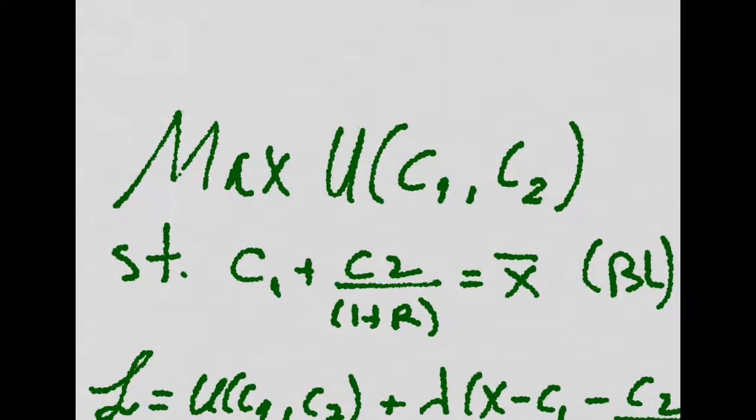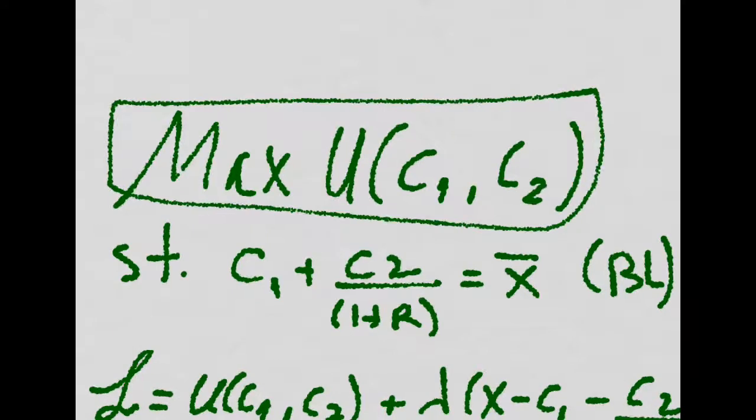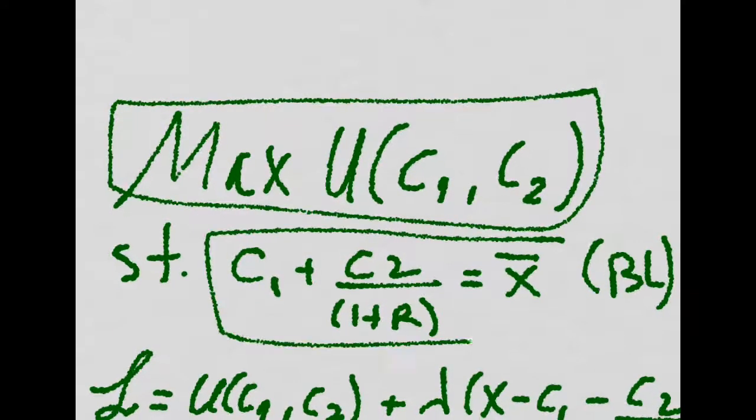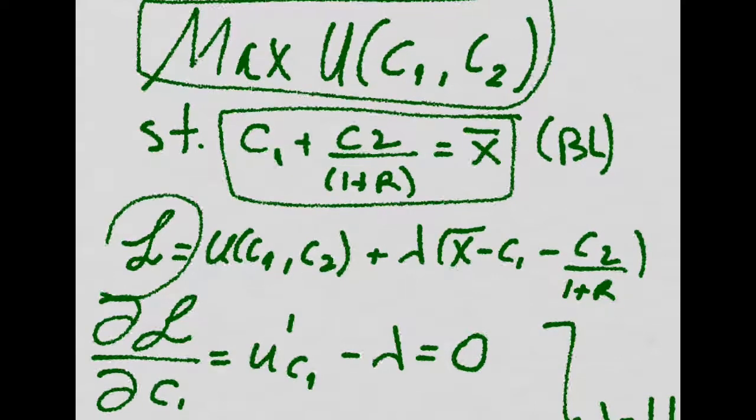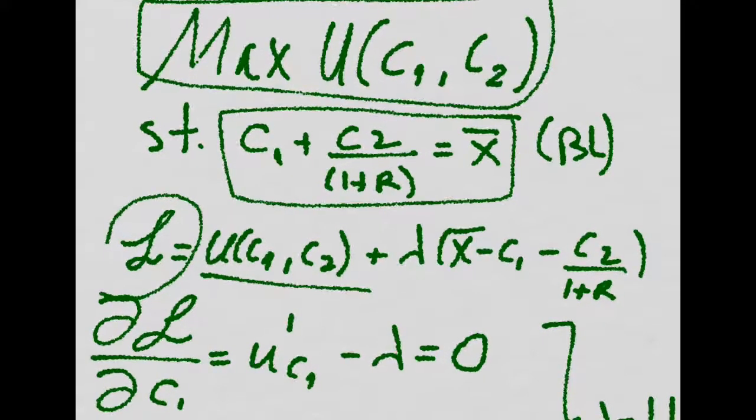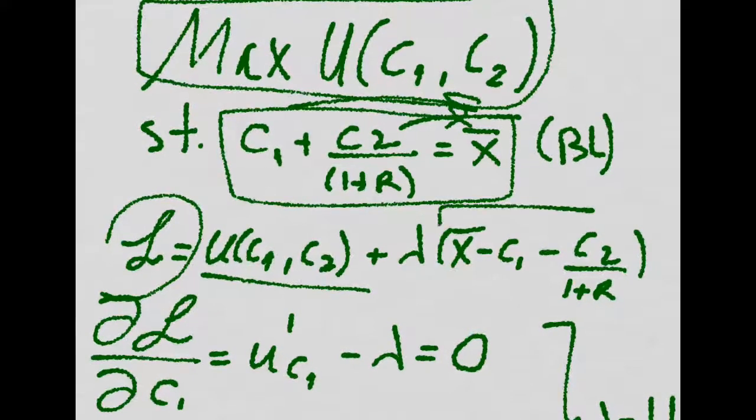our guy is happy because he is maximizing his utility with respect to this budget line. So this is how we do it. We maximize the utility such that we are in this budget line. We write the Lagrangian as the utility plus some lambda times this.